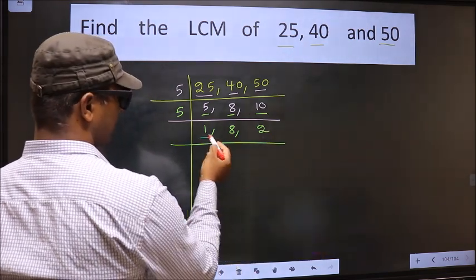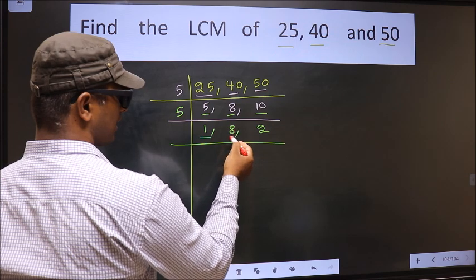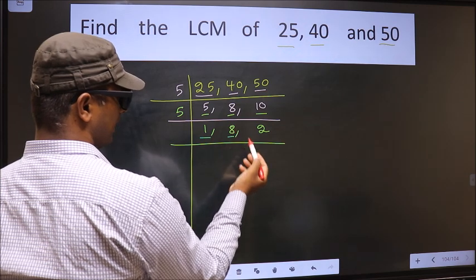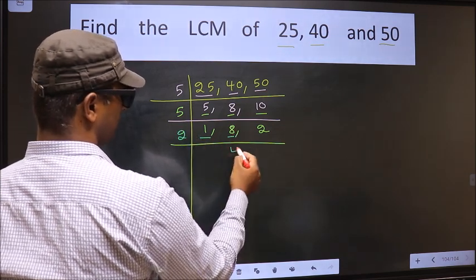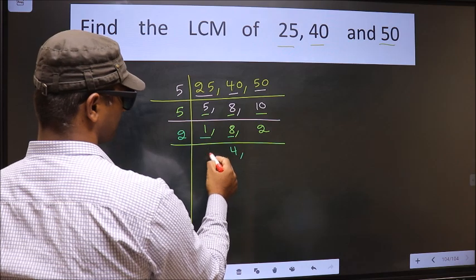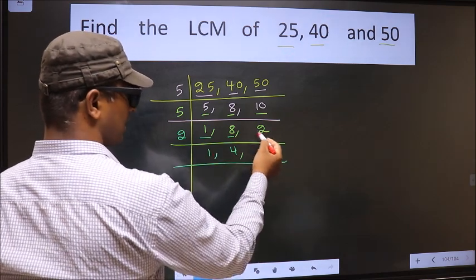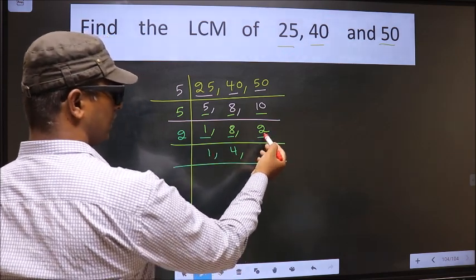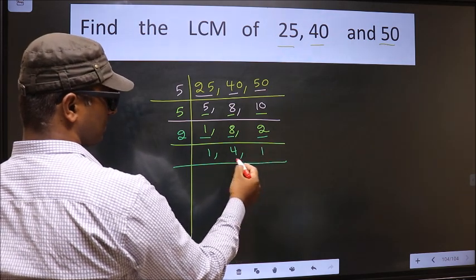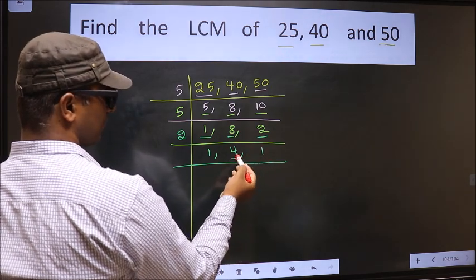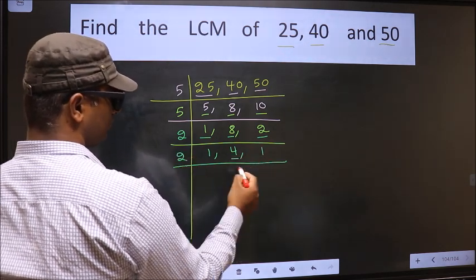We got 1 here, so focus on the other number, that is 8. 8 is 2 times 4. The other number 2 — when do we get 2 in the 2 table? 2 times 1 is 2. Now here we have 4. 4 is 2 times 2.